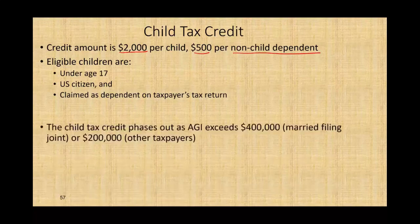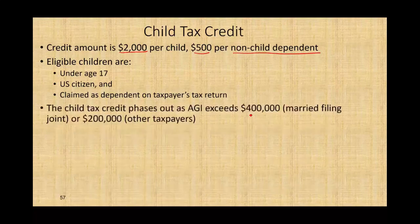Bear in mind, the child tax credit phases out at an AGI that exceeds $400,000 for married filing jointly, or $200,000 for other taxpayers. This is a very family-friendly child tax credit — I do take advantage of it myself, so you know my income is not above $400,000.